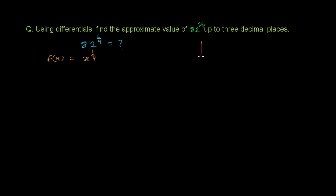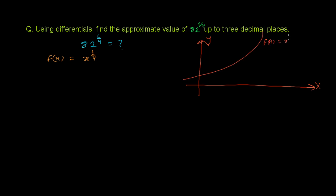Let's first understand this in a graph and then solve it. This is our x-axis and y-axis, and our graph is f(x) = x^(1/4). In this graph, whatever you plug in for x, you get x^(1/4) out. I need to find 82^(1/4), so I'll plug in 82. If I put 82 here, I'll get f(82), which is 82^(1/4) — the corresponding y-coordinate. This point is (82, f(82)).